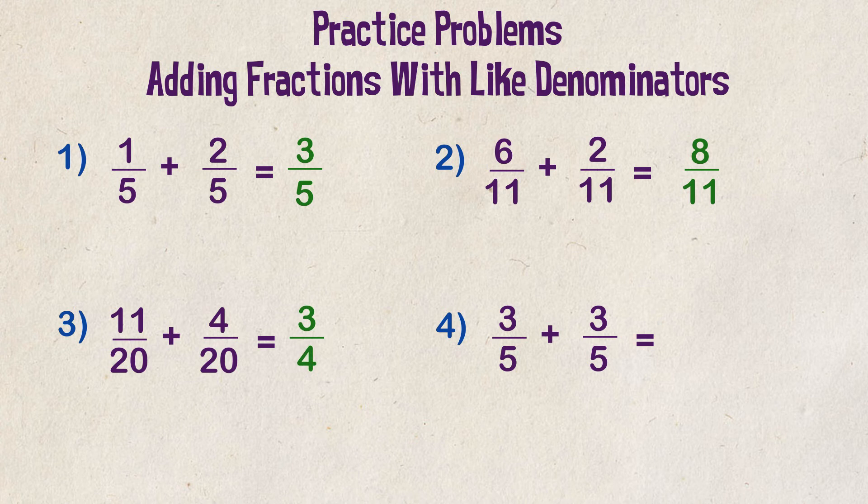Example four. Three fifths plus three fifths. We add three plus three and we get six. We put it over five and we get six fifths.